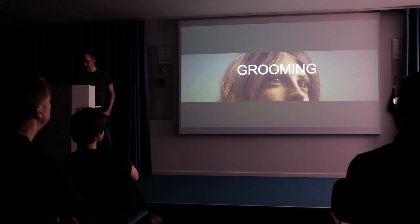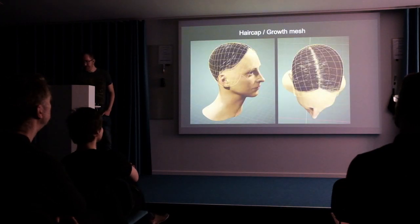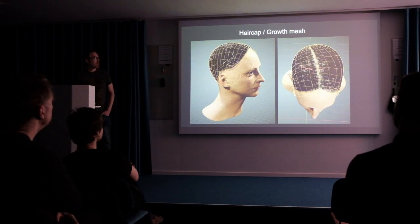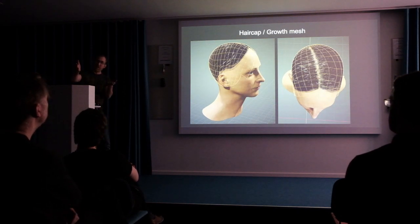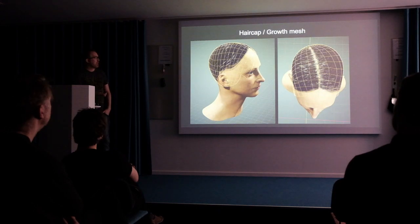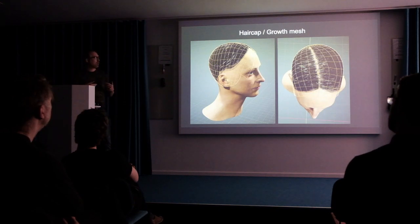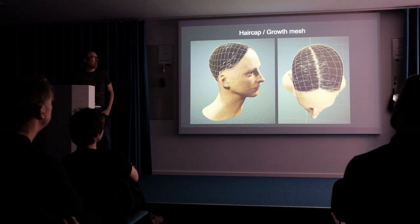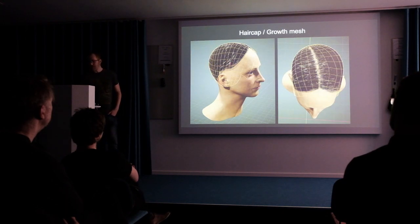Let's look at how the grooming works. I start off with a hair cap, or a growth mesh, whatever you want to call it. It's interesting because in Blender you really need to pay attention to having the topology kind of follow the pattern of the hair. It wouldn't work to have a pole there, because the hair card sort of aligns to the closest edge.